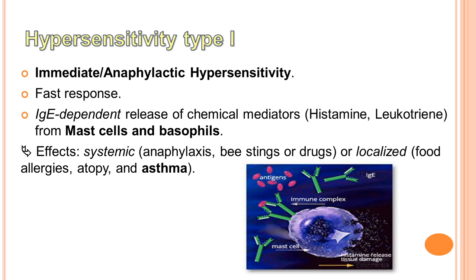Type 1 is also characterized by IgE-dependent release of chemical mediators from mast cells and basophils. The effects may be systemic, for example anaphylaxis from bee stings or drugs, or localized, such as food allergies, atopy, or asthma. Còn được đặc trưng bởi sự phóng thích các chất trung gian hóa học từ mast cell và bạch cầu hạt ưa base phụ thuộc IgE. Tác dụng có thể toàn thân như sốc phản vệ do ong đốt hoặc thuốc, hoặc cục bộ như dị ứng thực phẩm, atopy hoặc cơn hen suyễn.